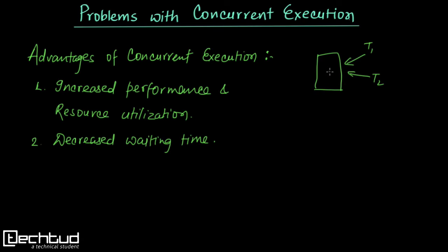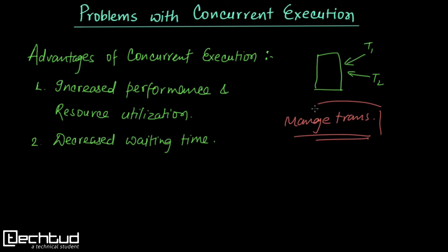When we go for concurrent execution over the same database, we need to manage these executions. We need to manage transactions because there are various chances of getting incorrect data throughout concurrent transaction execution. Before going into managing transactions using various protocols, we first need to understand the basic problems associated with concurrent executions. Once we understand the problems, then we can find proper solutions. In this lecture we will be understanding the various problems with concurrent executions. The first one is the lost update problem.